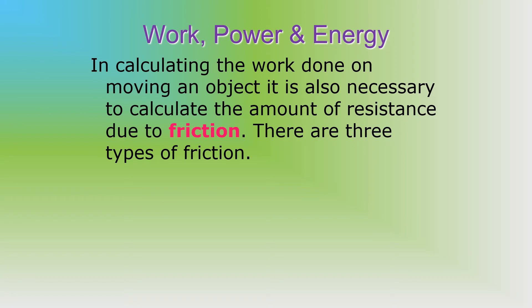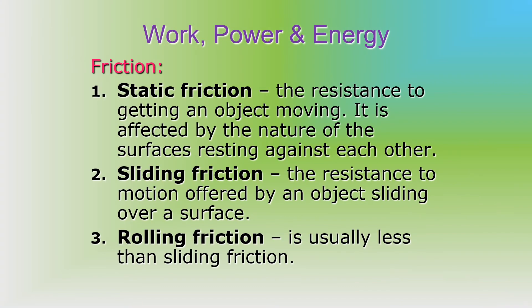In calculating the work done on moving an object, it is also necessary to calculate the amount of resistance due to friction. There are three types of friction. The first is static friction, the resistance to getting an object moving, affected by the nature of the surfaces resting against each other. It takes more force to get an object moving from a stationary position; once moving, it takes less force to keep it moving. Sliding friction is the resistance to motion offered by an object sliding over a surface. Rolling friction is usually less than sliding friction — wheels and bearings are examples where friction is reduced by replacing sliding friction with rolling friction.